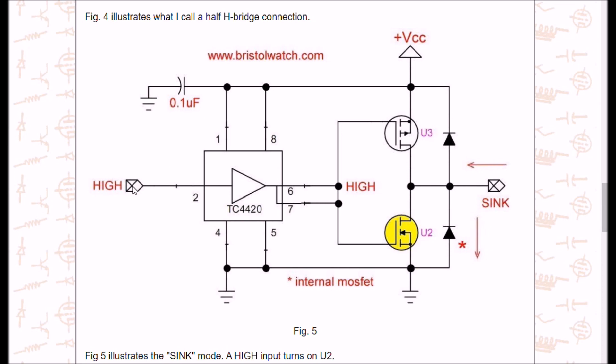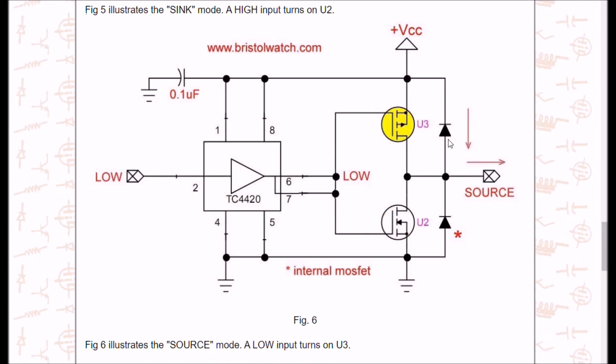In this example, I have a high input. It gives me a high output. It turns off U3, the P-channel, and it turns on U2, the N-channel. Thus, you have a current path back from the load through U2. Now, these diodes that you see here are most of the time internal to the MOSFETs. I drew them in because some people wanted to see the diodes. Same circuit again, but we put a low in. A low out turns off U2. It turns on U3, creating a source current from VCC back to the load.